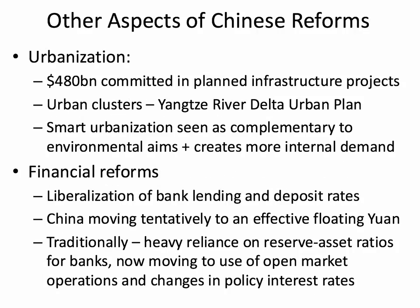When it comes to urbanisation, China remains some way behind the curve — at probably about 55% urbanisation, whereas high-income countries typically have a much higher rate. They've committed nearly $500 billion to planned infrastructure projects, and in particular they're looking to build smart cities and urban clusters. The Pearl River Delta Urban Plan is a good example of that.